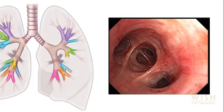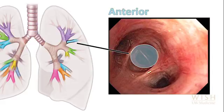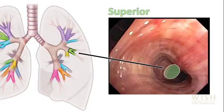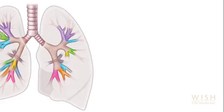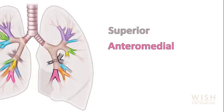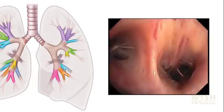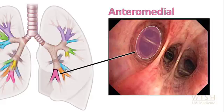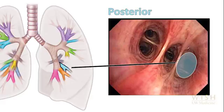Now for a quick anatomy reminder. The left lung has two lobes. The upper lobe divides into anterior, apicoposterior and lingular segments. The lingula has inferior and superior segments. The left lower lobe divides into the superior, anteromedial, lateral and posterior segments. The first segment encountered during bronchoscopy is the superior segment; beyond it, the anteromedial, lateral and posterior segmental airways divide.